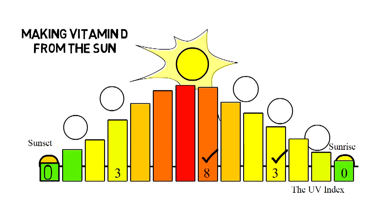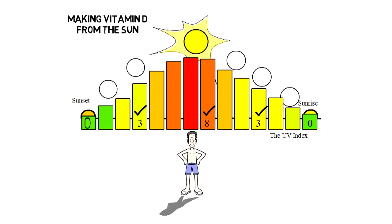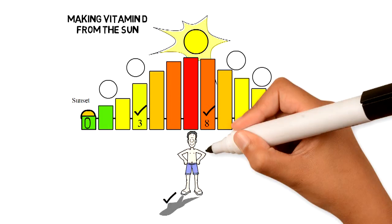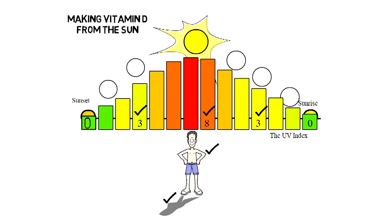The UV index outside must be above 3. Your shadow must be shorter than you, and the more skin you have exposed, the more vitamin D you will make.